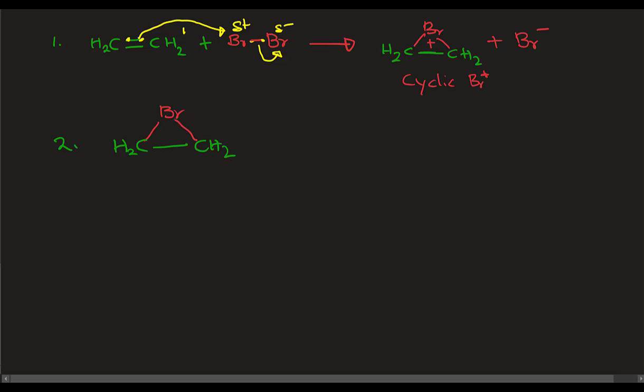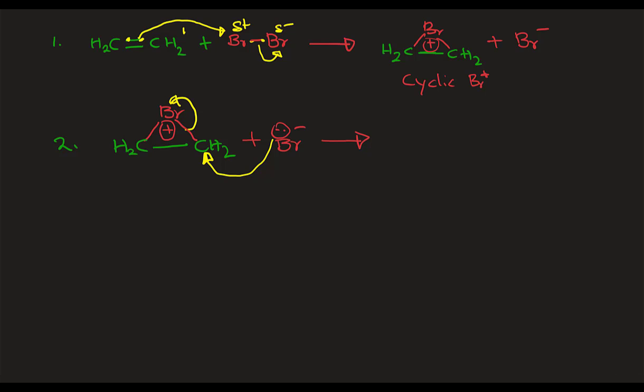The cyclic bromonium ion is attacked by bromide. This bromide is the nucleophile that attacks from the back side.